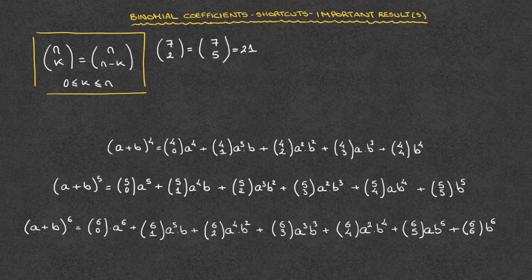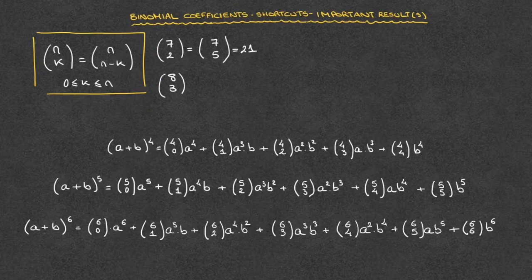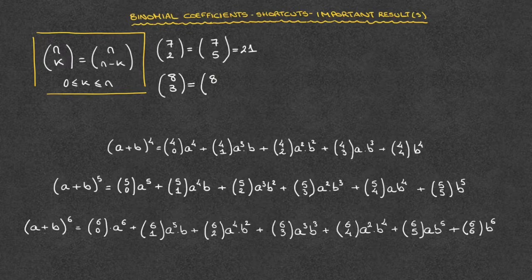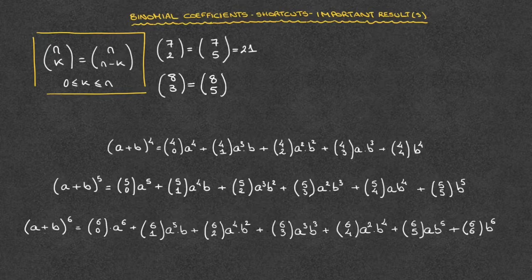Another example: the binomial coefficient 8 choose 3. This result tells us it equals the binomial coefficient 8 choose 8 minus 3, which is 8 choose 5. Go ahead and check for yourselves — both of those binomial coefficients are equal to 56.